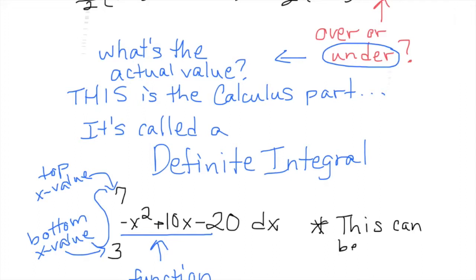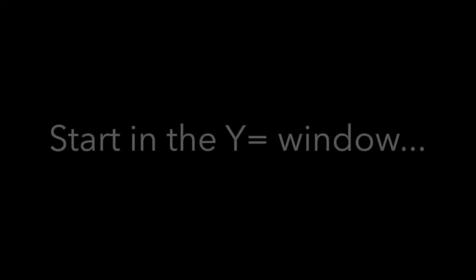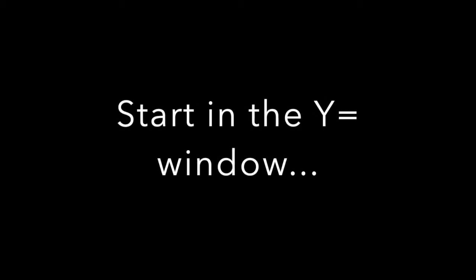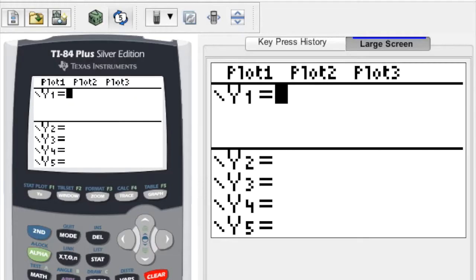So to calculate this definite integral, there are several ways we can do it. One of the ways we can do it, and we can check it especially, is by using the calculator. So to do that, we're going to start in the Y equals window on our calculator, and we're going to enter in the function.